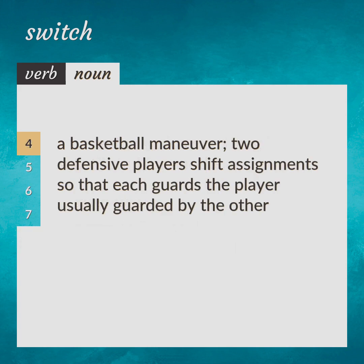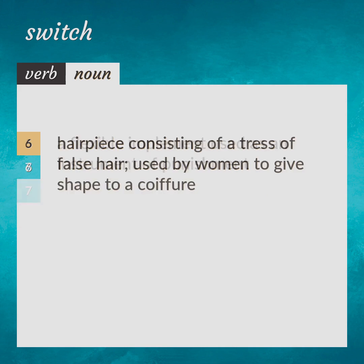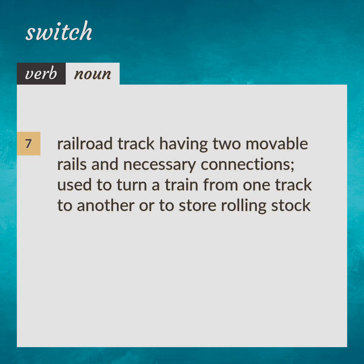A basketball maneuver: two defensive players shift assignments so that each guards the player usually guarded by the other. A flexible implement used as an instrument of punishment. A hairpiece consisting of a tress of false hair, used by women to give shape to a coiffure. A railroad track having two movable rails and necessary connections, used to turn a train from one track to another or to store rolling stock.